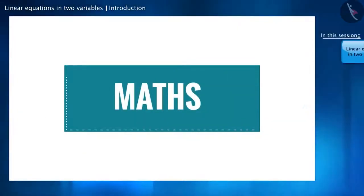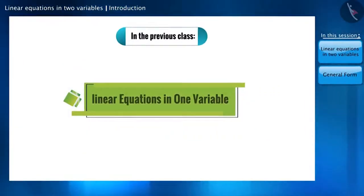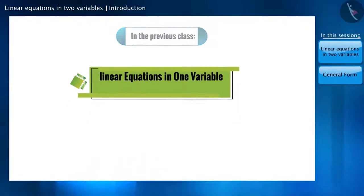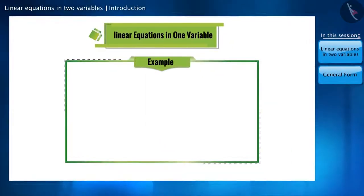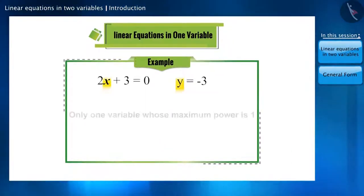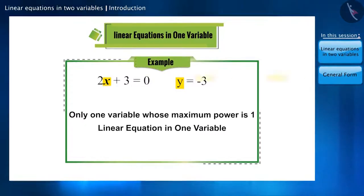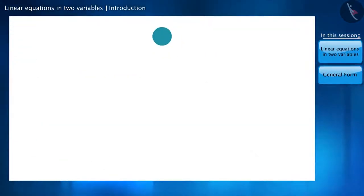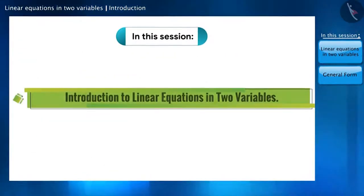Friends, welcome to this video on mathematics. In the previous class we learned about linear equations in one variable. Here are some examples. Such equations have only one variable and its maximum power is one, therefore it is called a linear equation in one variable. Today we will move one step further and discuss linear equations in two variables and their general form.